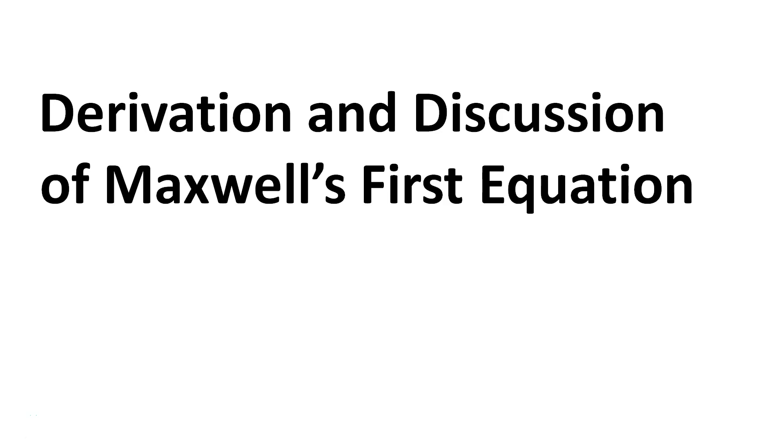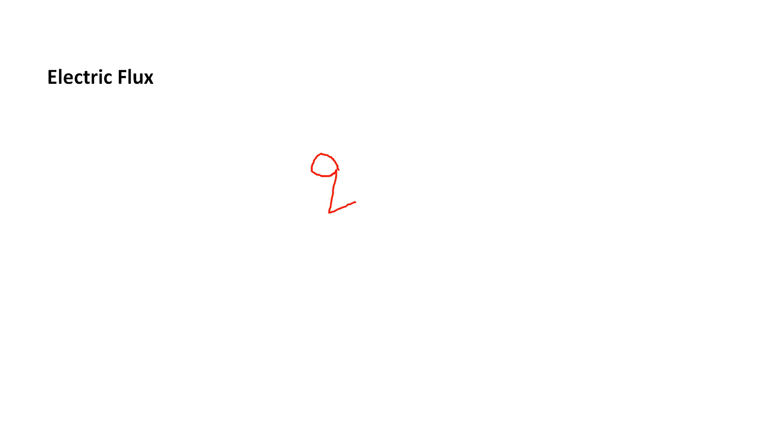Hello friends, today I am going to discuss the derivation and discussion of Maxwell's first equation. To understand Maxwell's equation, first we have to discuss what is electric flux. The meaning of flux is simply flow. If I say water flux, it means the flow of water through a particular area. Similarly, if there is a charge, there will be an electric field, and electric flux means the flow of electric lines of force passing normally through a particular area.